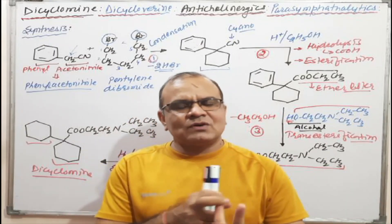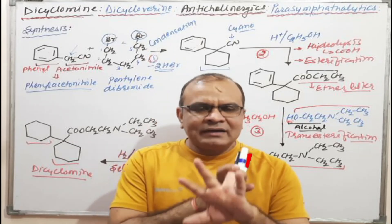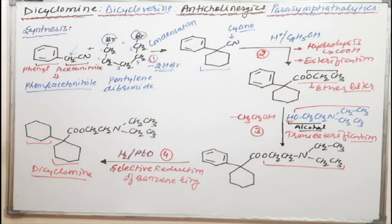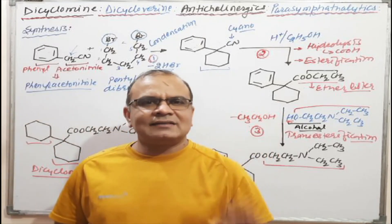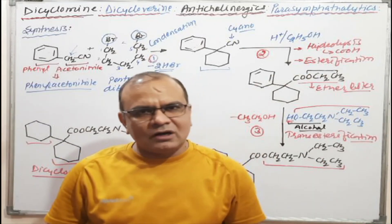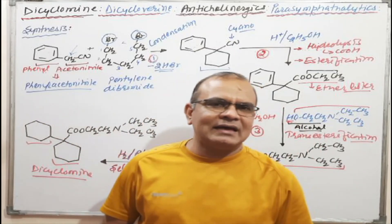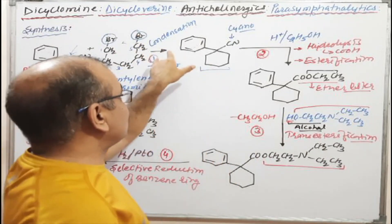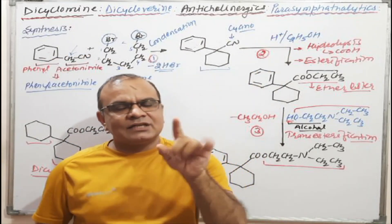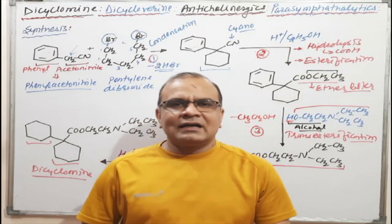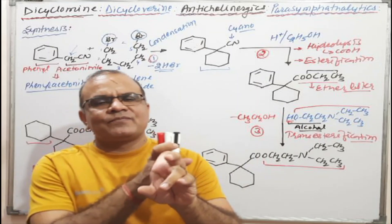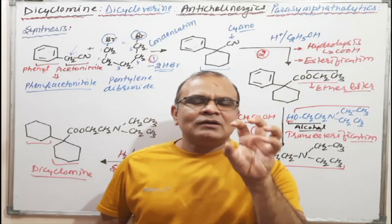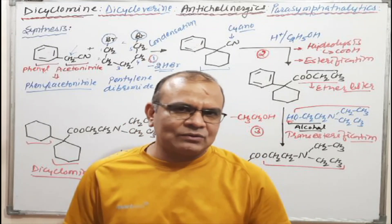This is the complete overview of Dicyclomene covering: mechanism of action including category and usage, structure and IUPAC name, and synthesis. In university exams, a short note on Dicyclomene should include all these components. For synthesis questions, include the name and type of each reaction for full marks. For competitive exams, focus on selective blockage of muscarinic receptors in the GIT causing smooth muscle relaxation.